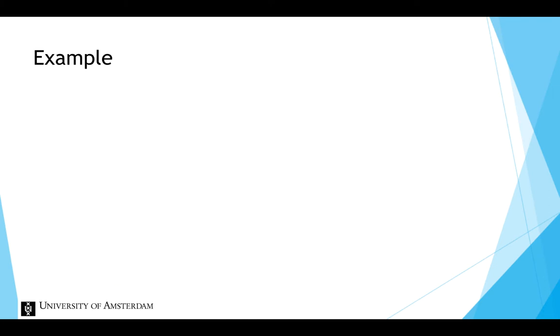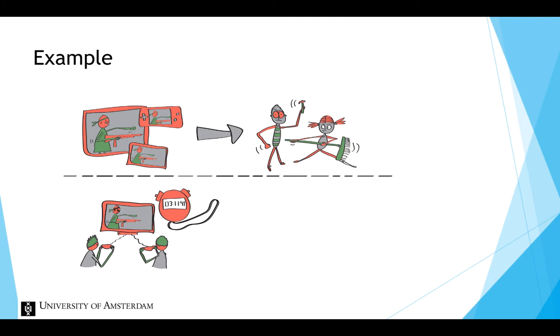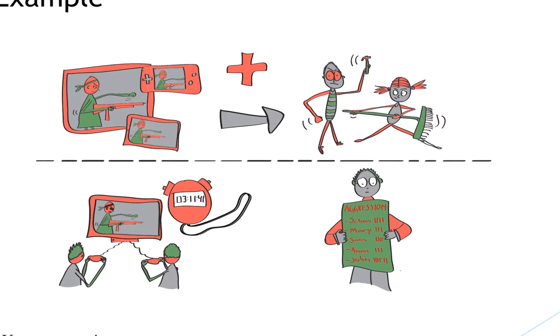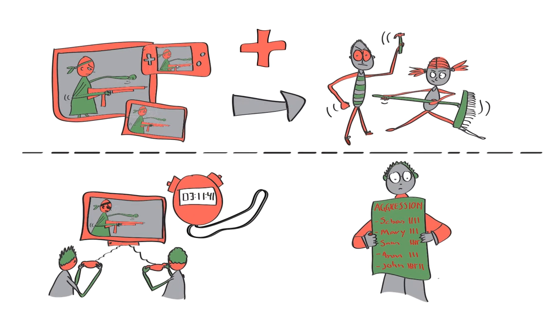Let's take another example. We want to investigate the relation between violent video games and aggression. We measure how many hours a week children play violent video games and measure how aggressive they are according to their teacher. Suppose we find a positive relationship. So kids who play more violent video games are more aggressive. We could argue that playing violent video games increases aggression, but we could also argue that aggressive children seek out more violent video games, indicating that the relationship is the other way around. So aggression increases playing violent video games.